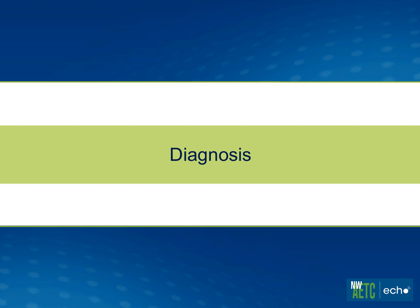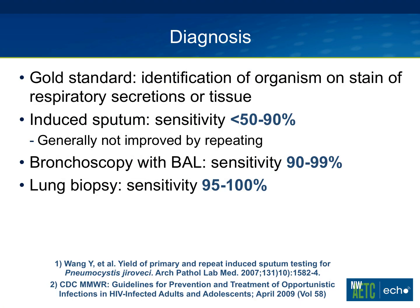Regarding diagnosis of PCP, pneumocystis cannot be cultured. The gold standard relies on identification of cysts or trophozoites on stains of respiratory secretions or rarely of tissue. The first step is induced sputum, with sensitivity ranging from less than 50% to 90% depending on the study, the person obtaining it, patient effort, and the lab's ability to read it. If an induced sputum is negative, repeating it generally doesn't help much — though one trial from India showed improvement with repeating, while a U.S. trial did not.